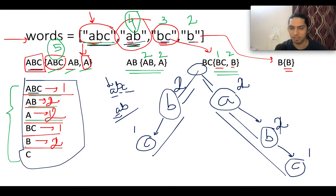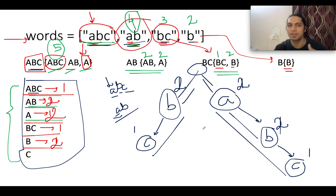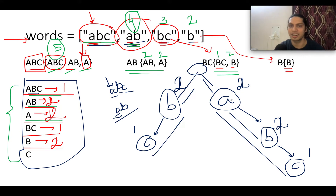We can use this trie to calculate the score of each word in the input. The trie scores are in sync with our previous map: score of 'abc' is one, 'ab' is two, 'a' is two, 'bc' is one, 'b' is two. We're just storing a score value with each character in the trie. Now let's walk through the coding section.